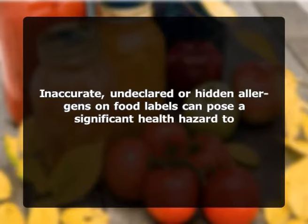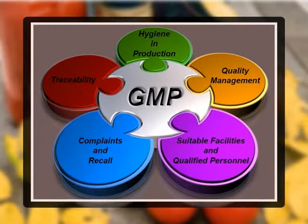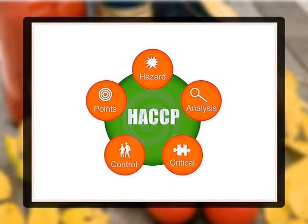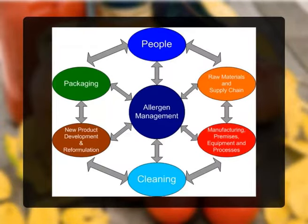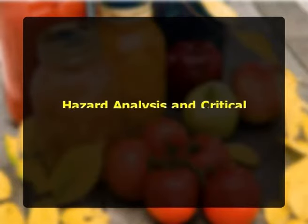Individuals with food allergies rely on accurate information on food labels to manage their condition. Inaccurate, undeclared, or hidden allergens on food labels can pose a significant health hazard. Cross-contamination during processing, packaging, and storage can inadvertently produce products containing allergens not reflected in the ingredient list. Strict adherence to good manufacturing practices, hazard analysis, critical control points, and allergen prevention plans will reduce the likelihood of cross-contamination.